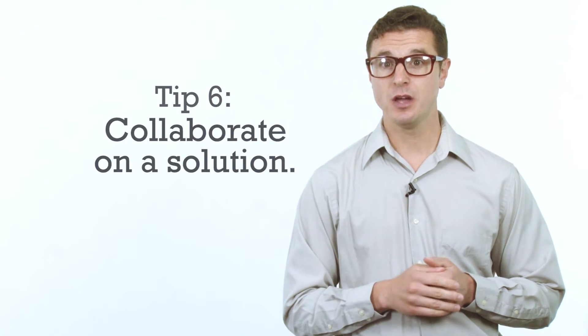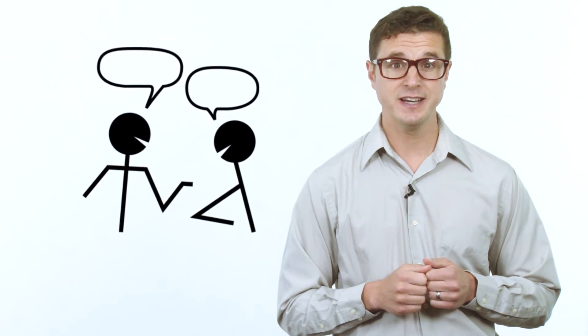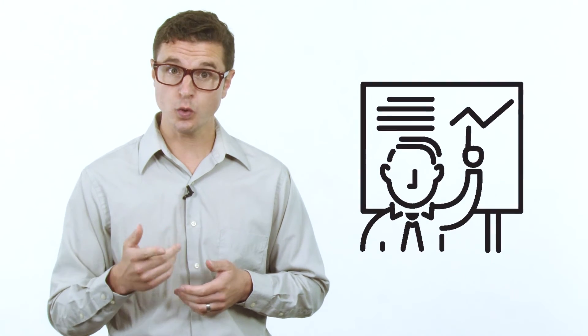Tip six: collaborate on a solution. Propose potential remedies and talk with the client to see which option they would most prefer. If the problem is complicated and there are no immediate solutions, assure the customer that rectifying the issue is your top priority. Give them a specific time when you will contact them with an update, then call them back before the stated time. Once you've agreed upon a solution, bring it to fruition.